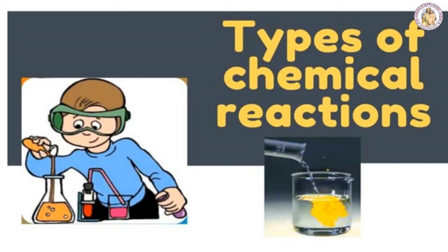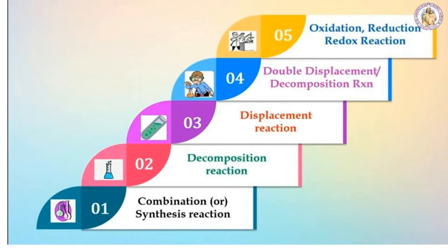Now we are going to see the types of chemical reaction. There are so many types, classified based on the manner in which atoms of the reactants are rearranged. There are five types: first, combination reaction; second, decomposition reaction; third, displacement reaction; fourth, double displacement reaction; and fifth, oxidation-reduction or redox reaction.